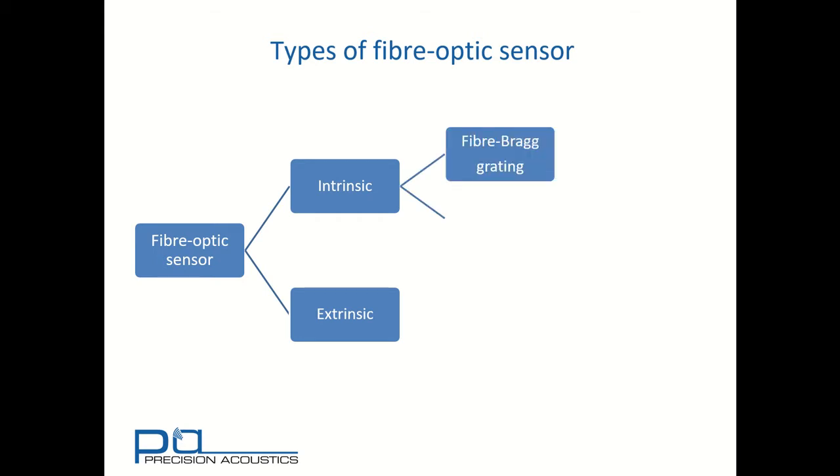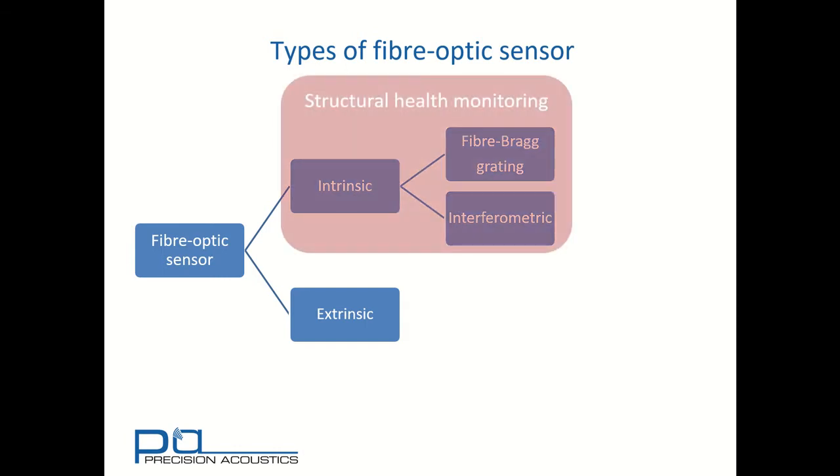The two most common forms of intrinsic sensor are fiber-Bragg gratings and interferometric sensing. And whilst intrinsic sensors are very commonly used in structural health monitoring and civil engineering structures or aircraft structures,